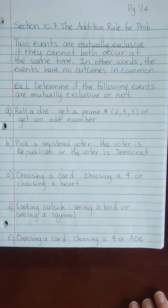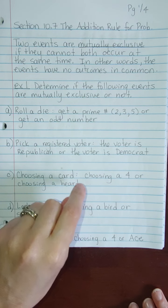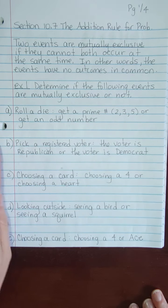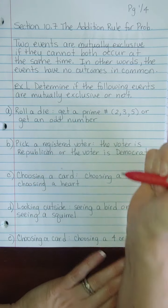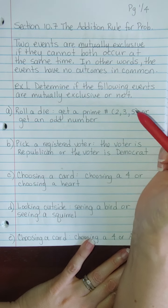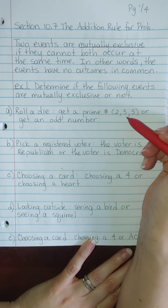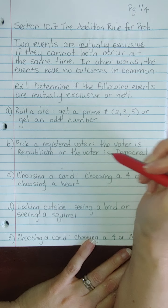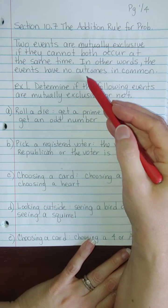Is it possible to roll a die one time and get a prime number or to get an odd number? Are these mutually exclusive events? Well, no — an odd number, you could get three or five. So we say that these two events are not mutually exclusive because they have outcomes in common.